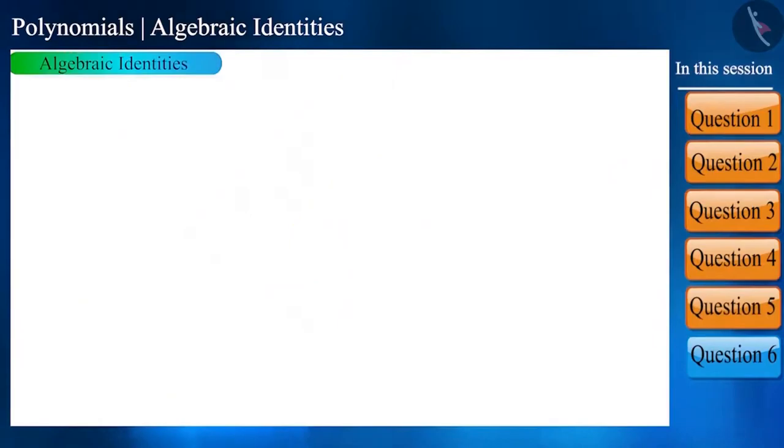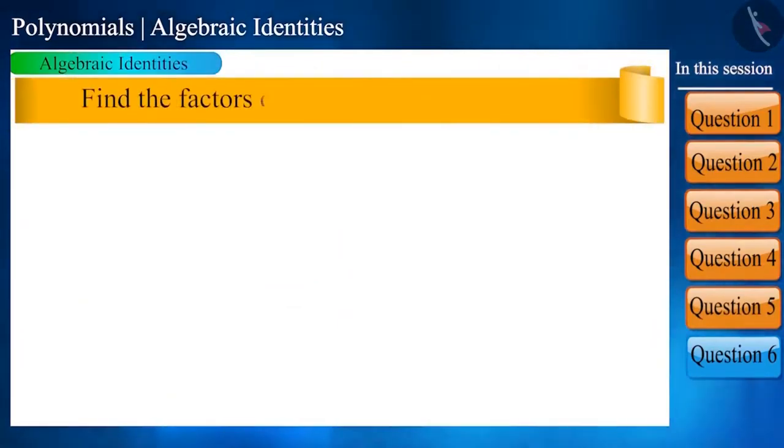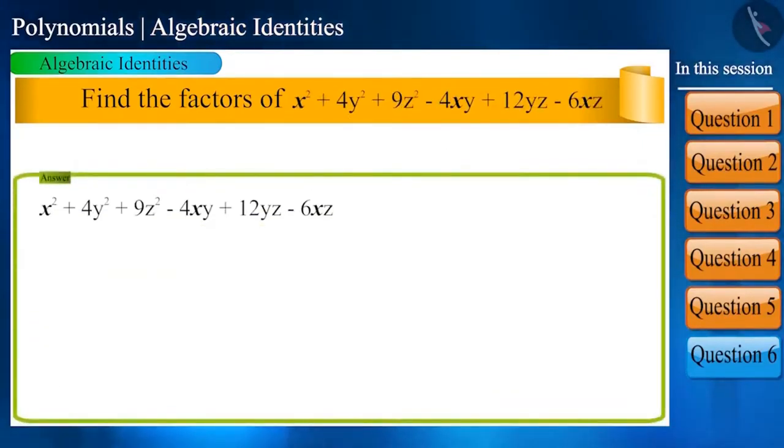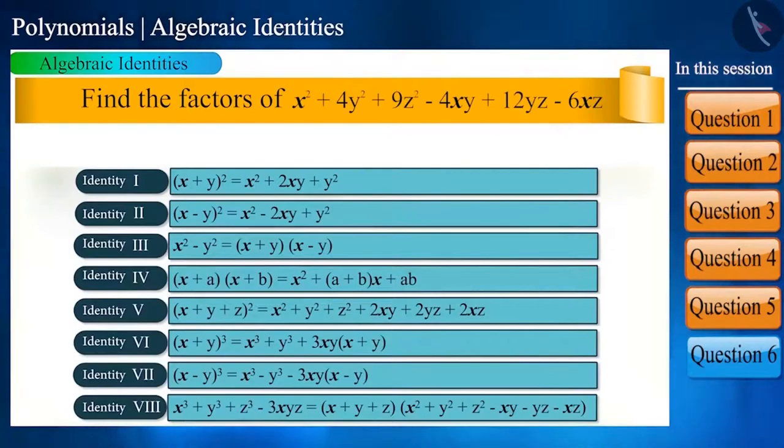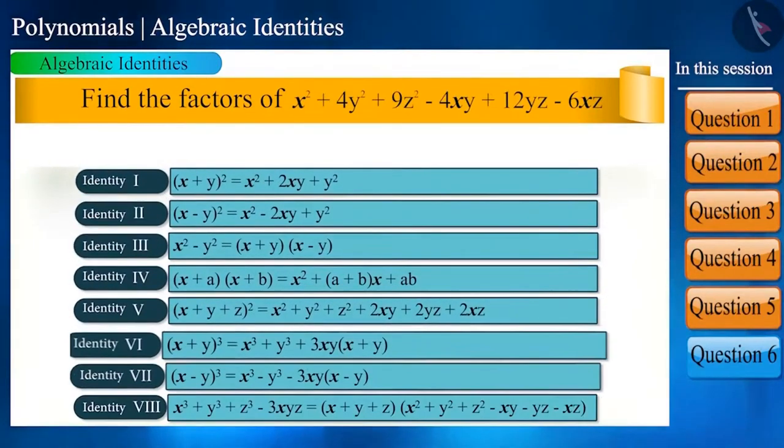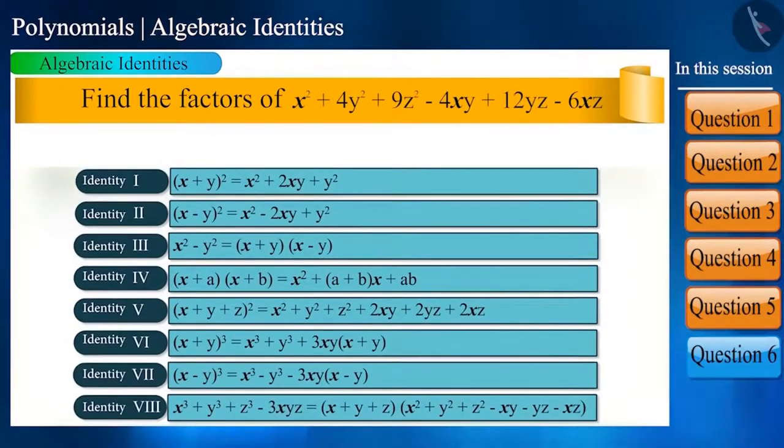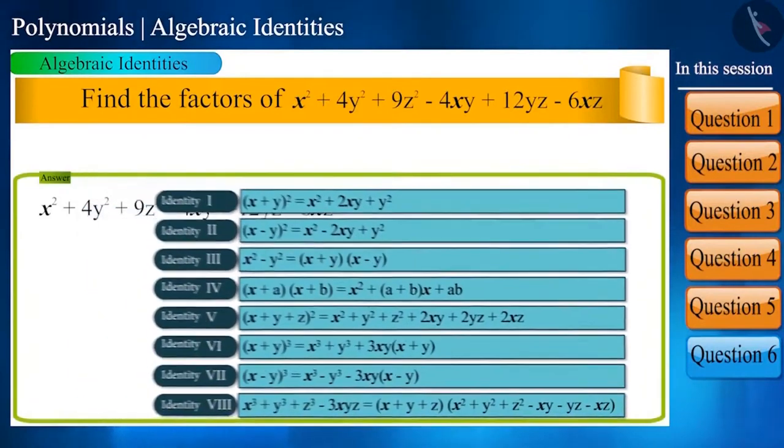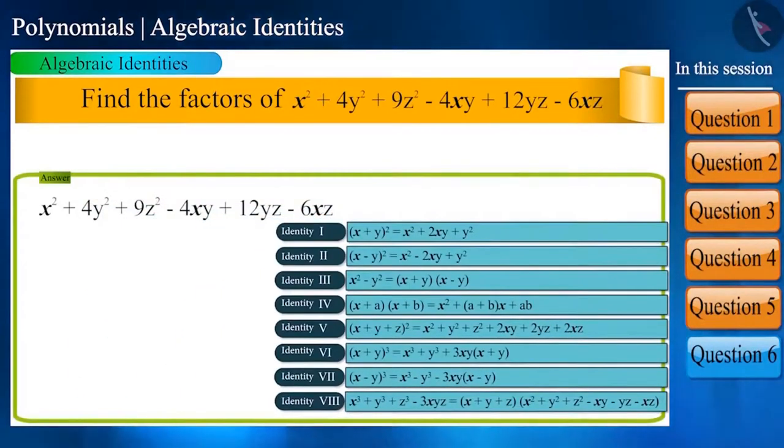Let's take the next question: Find the factors of x square plus 4y square plus 9z square minus 4xy plus 12yz minus 6xz. Once again, we will look only at the variable and all the identities and find out with which identity it resembles. If we write this expression only in terms of x, y and z, then it will look somewhat like this.